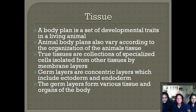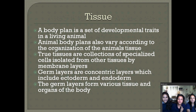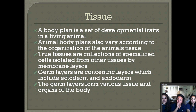Next is tissue. A body plan is a set of developmental traits in a living animal. Animal body plans also vary according to the organization of the animal's tissue. True tissues are collections of specialized cells isolated from other tissue by membrane layers. Germ layers are concentric layers that include the ectoderm and endoderm, and they form the various tissues and organs of the body.